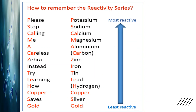Now here is a small sample showing how to remember the reactivity series. Students come up with many different ideas to remember it. The main elements placed in order are: potassium, sodium, calcium, magnesium, aluminium, carbon (which is a non-metal), zinc, iron,